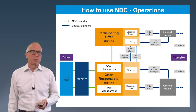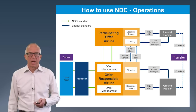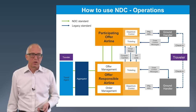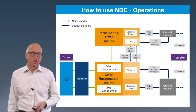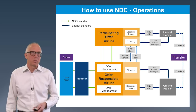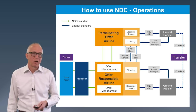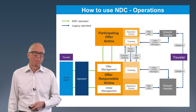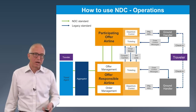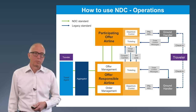In response, the offer responsible airline — who is the ticketing airline — replies with the settlement authorisation code, because there needs to be some money passed between these two carriers, and we need to identify the validity of the payment. And that ends the operational process.